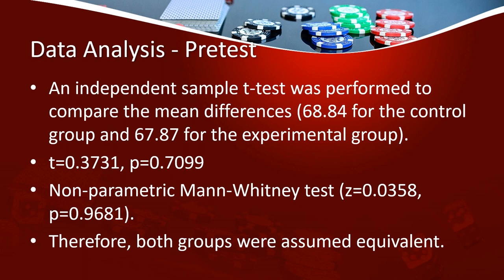For the data analysis, an independent sample T-test was performed to compare the mean differences. For the control group, the mean was 68.84, while for the experimental group it was 67.87. The T-value was 0.3731 with a P-value of 0.7099. I also made use of a non-parametric Mann-Whitney test, with Z = 0.0358 and a P-value of 0.9681. Because the P-values are non-significant, both groups were assumed equivalent.